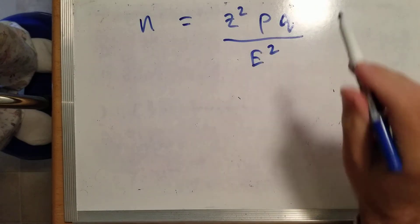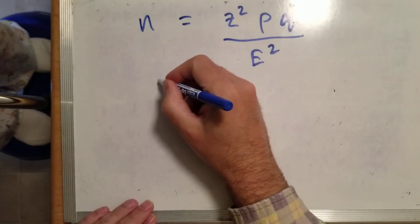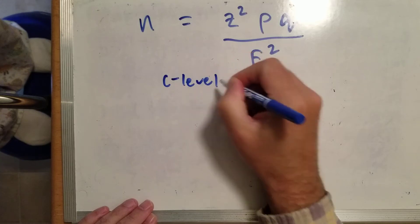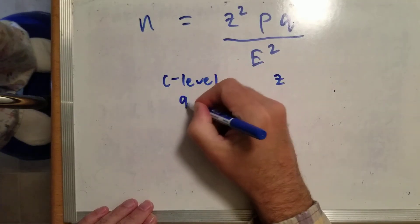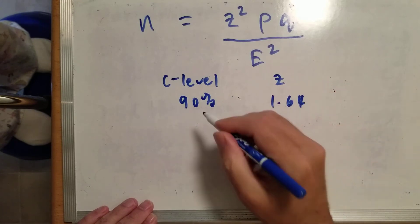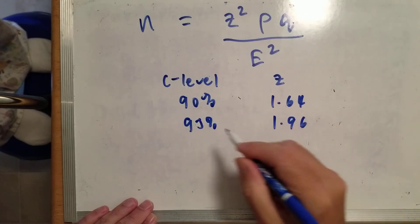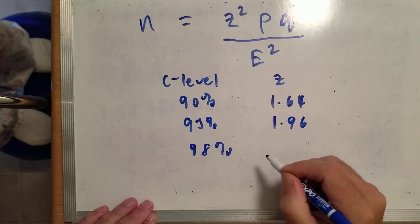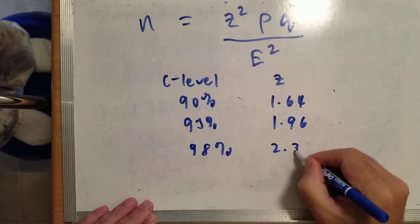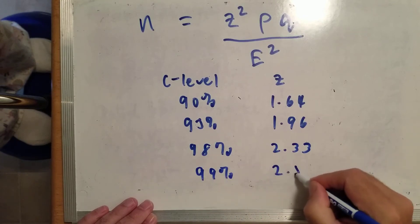Z comes from the confidence level. You can calculate Z, but for the most commonly used confidence levels, I'll give you the Z values. For 90%, the Z value is 1.64. For 95%, it's 1.96. For 98%, it's 2.33. And for 99%, it's 2.58.